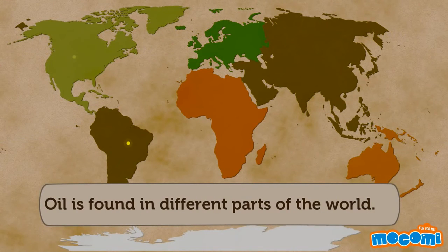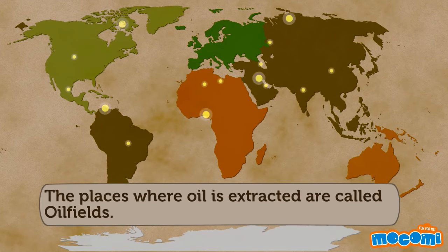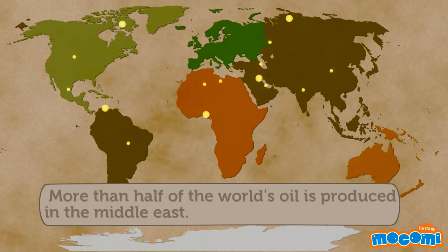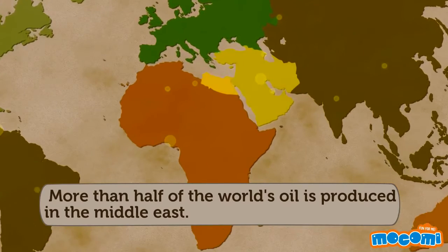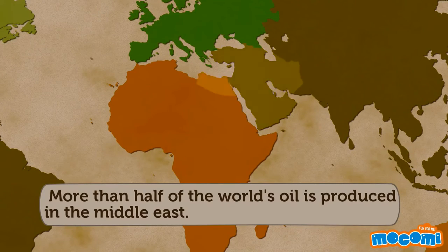Oil is found in different parts of the world. The places where oil is extracted are called oil fields. More than half of the world's oil is produced in the Middle East.